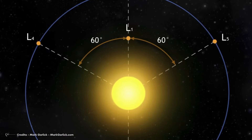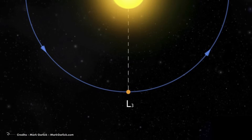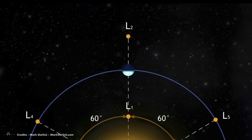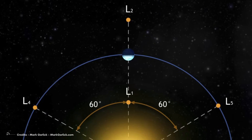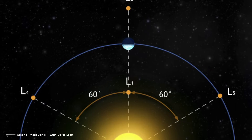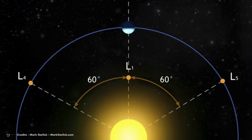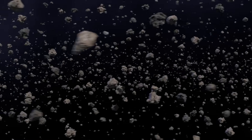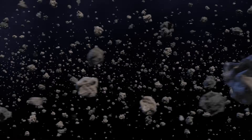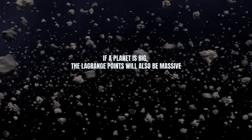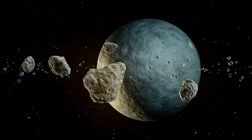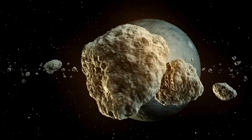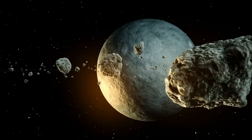All planets have five Lagrange points concerning the Sun, denoted as L1, L2, L3, L4, and L5. Of these five points, L4 and L5 are particularly important for asteroids, as they are in the same planet's orbit. Because these two regions are zones of gravitational balance, all bodies in those regions will stay there indefinitely. If a planet is big, the Lagrange points will also be massive and cover a larger area, creating more opportunities for small objects like asteroids to get trapped there indefinitely.